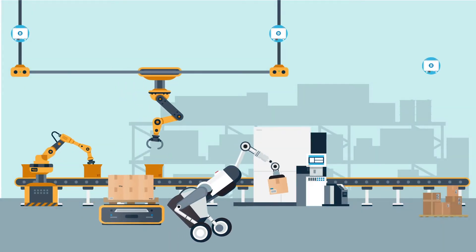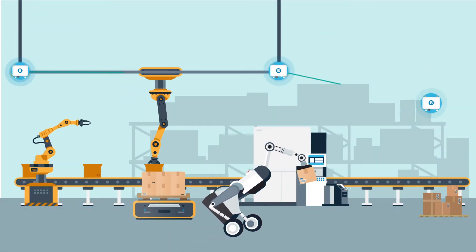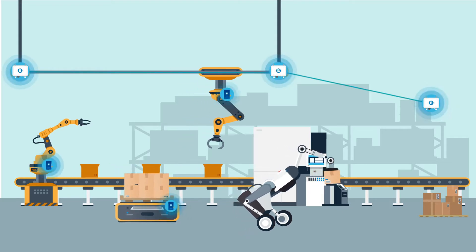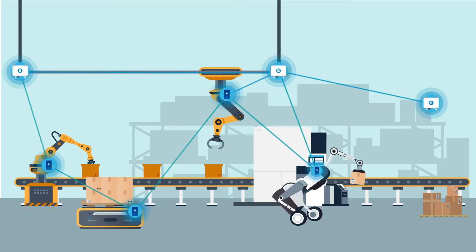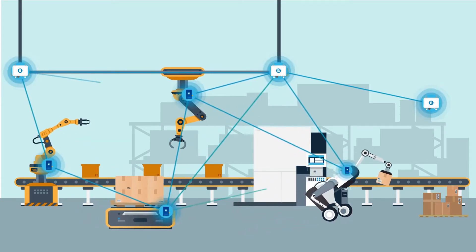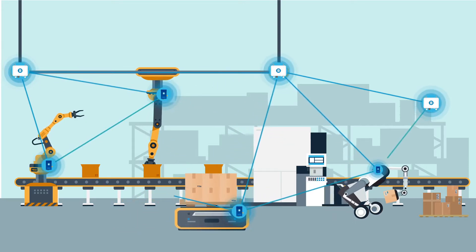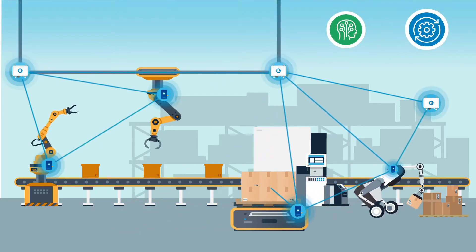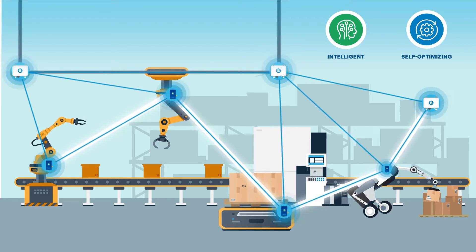Rajant's compact, lightweight breadcrumb nodes can be easily deployed on both fixed and moving assets like mobile robots. Breadcrumb-equipped systems can take connectivity with them wherever they roam and link directly with each other to enable machine-to-machine communications.